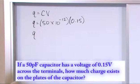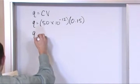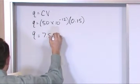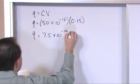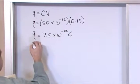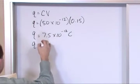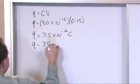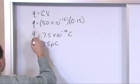And so the charge there, when you multiply these two things together, is 7.5 times 10 to the minus 12 coulombs. And so you could call that 7.5 pico coulombs because pico is 10 to the minus 12.